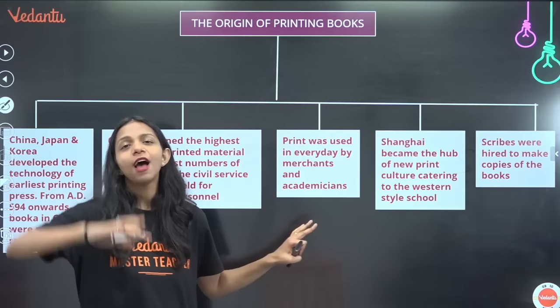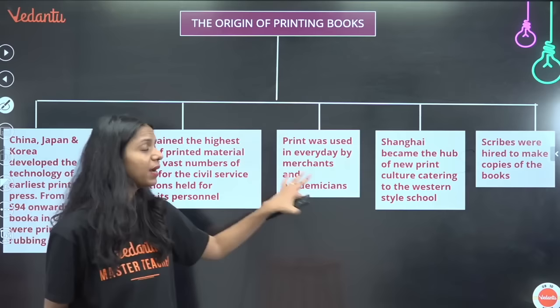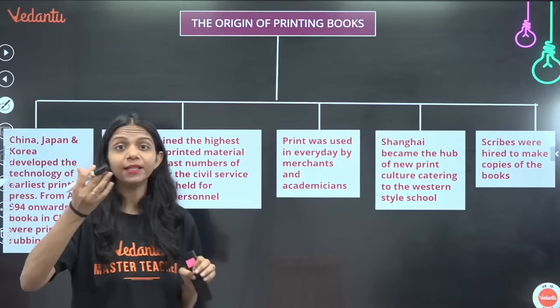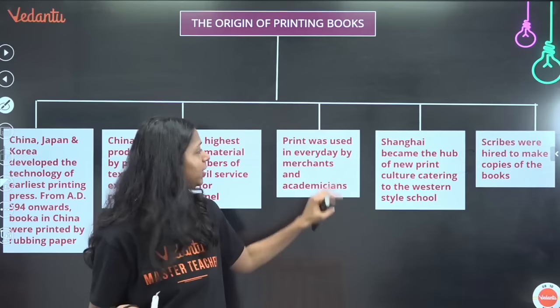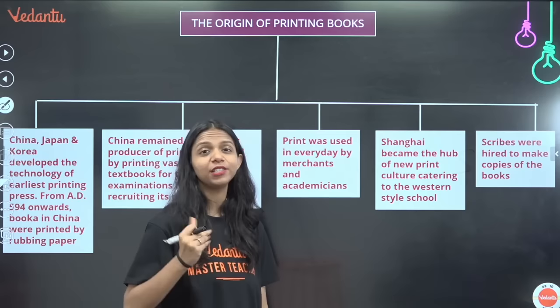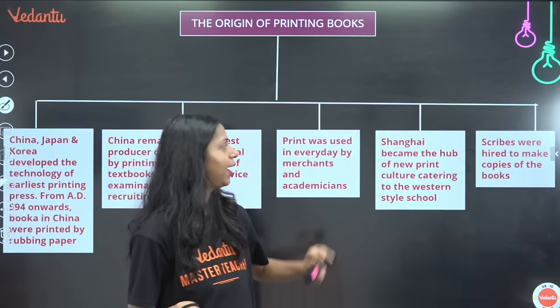Over time, print was not just used by the royal family or for examinations — merchants and academicians also started using it. With time, proper printing machines came from Europe to China, and Shanghai became the hub of the new printing culture. Scribes were still employed at this time to make copies of books.